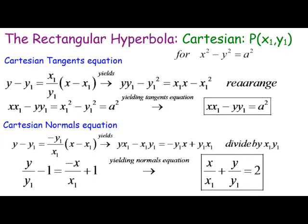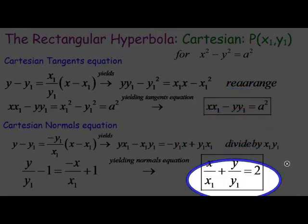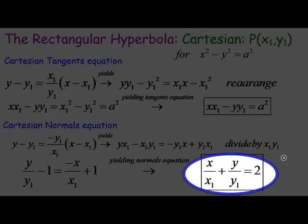These are the Cartesian tangent and normal equations for x squared minus y squared equals a squared. The tangent is x·x₁ minus y·y₁ equals a squared, and the normal is x over x₁ plus y over y₁ equals 2. This is for the pre-rotated rectangular hyperbola, x squared minus y squared equals a squared.